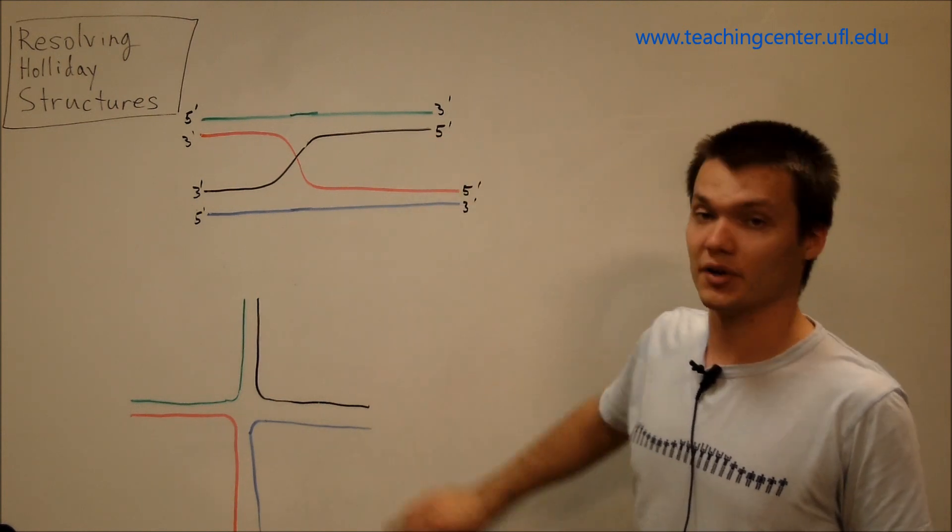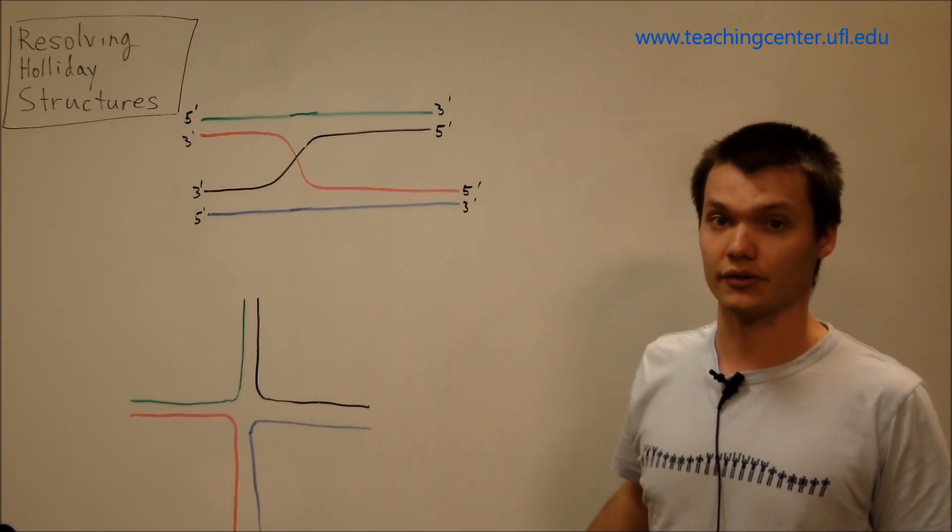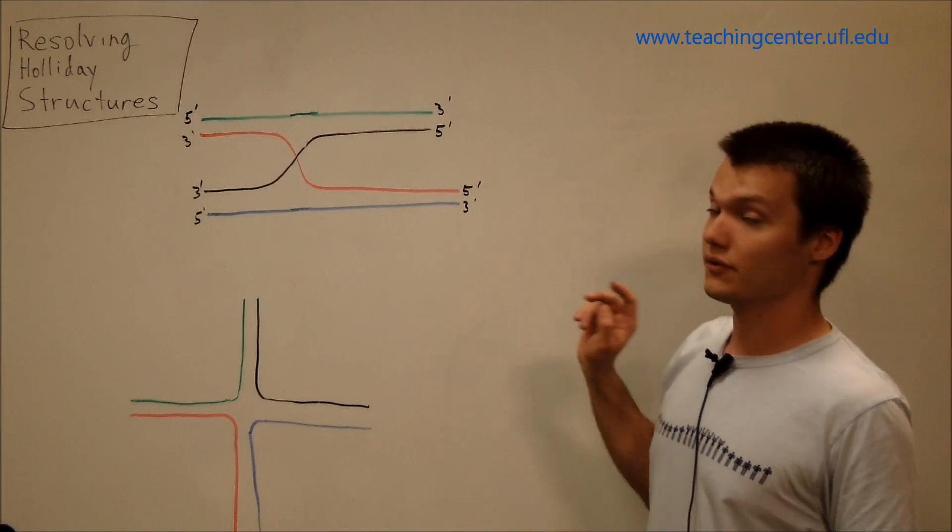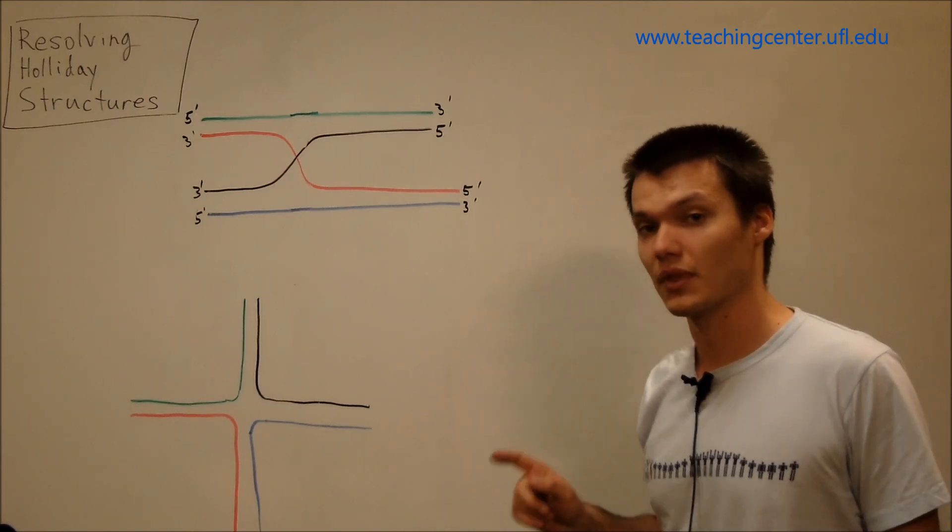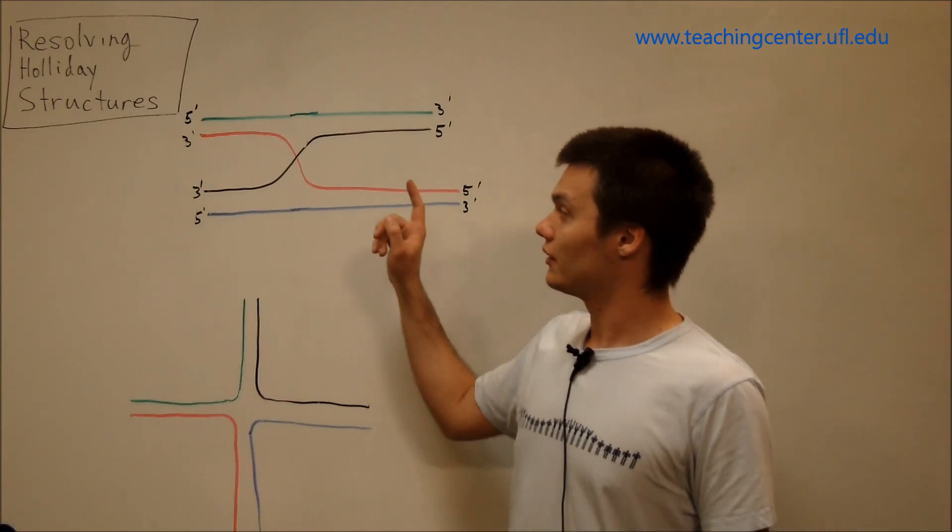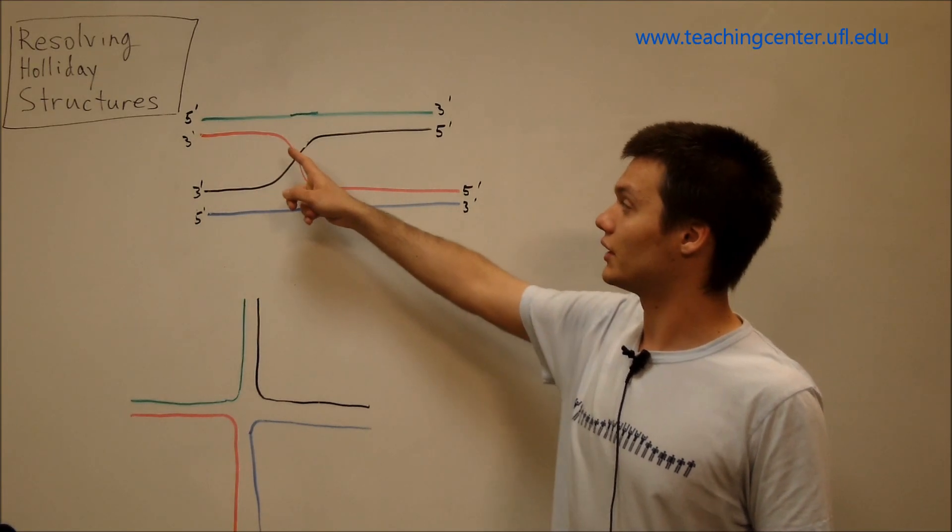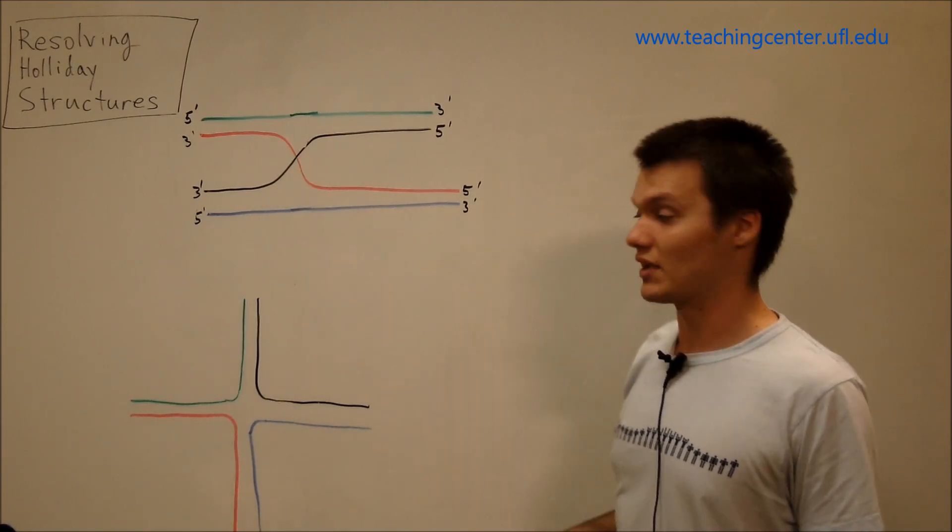So what we have here is two depictions of Holliday structures, and they're actually equal to one another, but we'll get into that in a second. So the first way to resolve a Holliday structure is probably the easiest way, and that is with what's known as the horizontal cut. And the horizontal cut is made across these two strands, this red strand and this black strand.